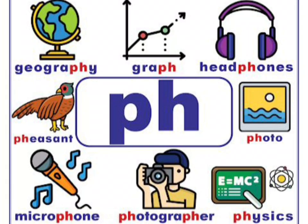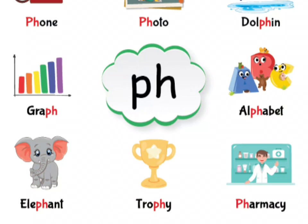There are a few more words with PH: phone, photo, dolphin, graph, alphabet, elephant, trophy, pharmacy.